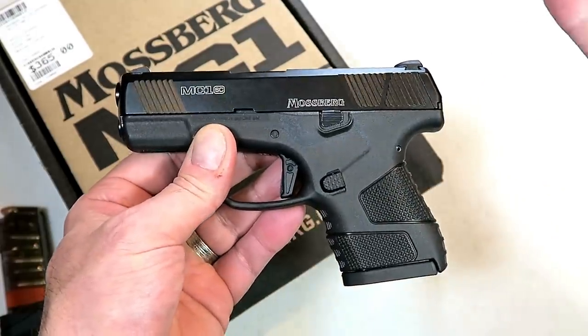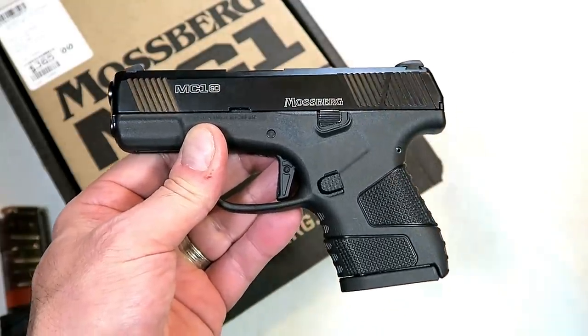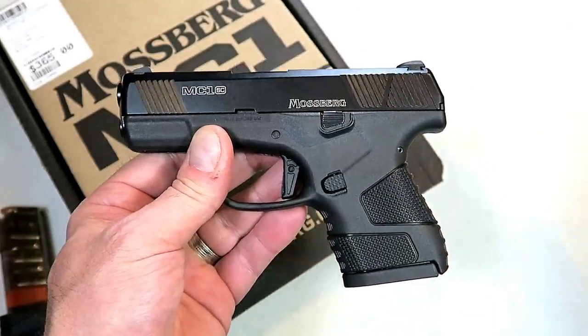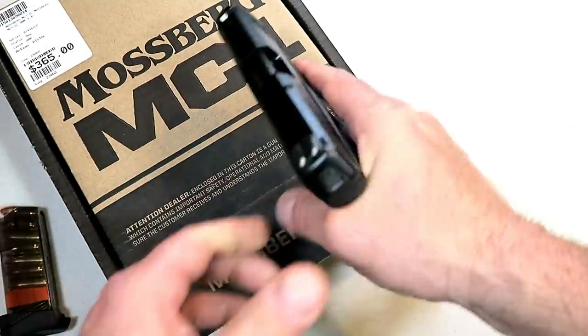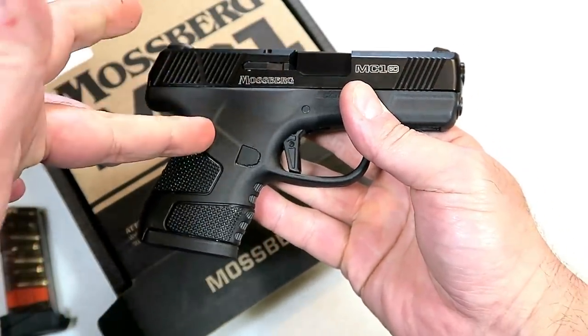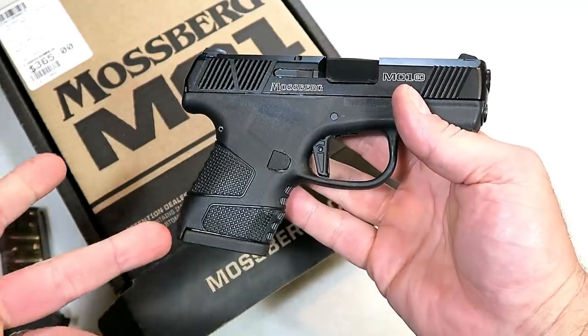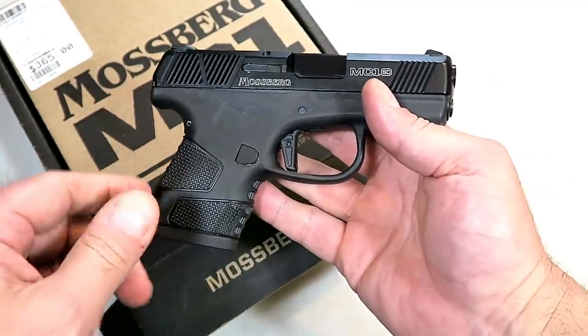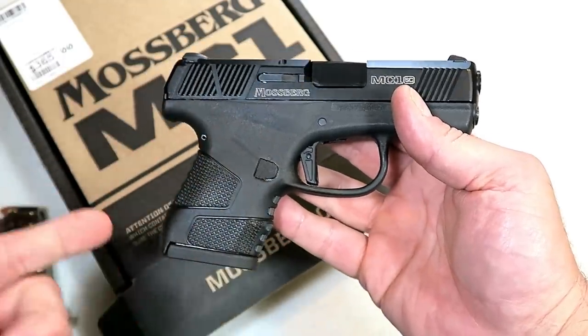But I found it interesting. They came out of the gate with a subcompact instead of a compact. Most manufacturers come out with a compact, then they move to a subcompact, not Mossberg. They came right out with a CCW gun, and they did a nice job. I have to say, I left a little uninspired. I thought to myself, don't we already have like a hundred different choices of these? And that is true, but they did some things here that are pretty cool, so we're going to get into that.